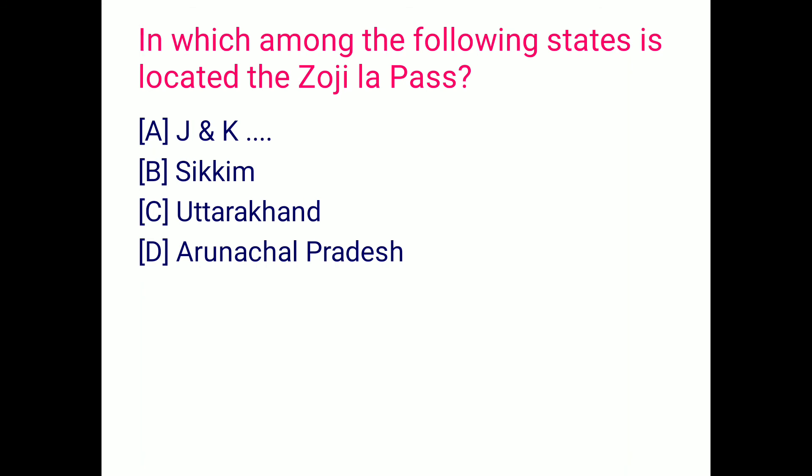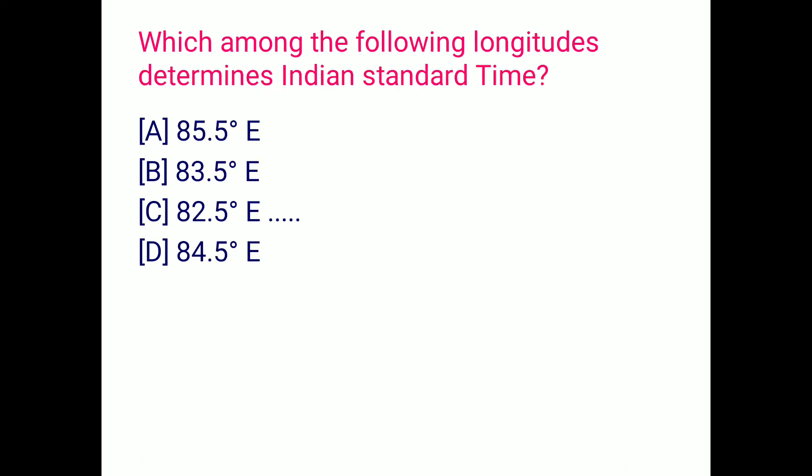India's only active volcano is located at Barren Island in the Andaman and Nicobar Islands. In which among the following states is Zojila Pass located? Zojila Pass is located in Jammu and Kashmir, option A. Which among the following longitudes determines Indian Standard Time? That is 82.5 degrees East longitude.